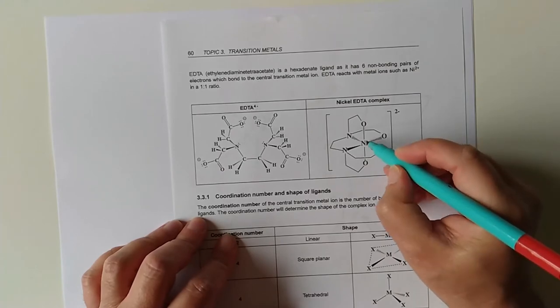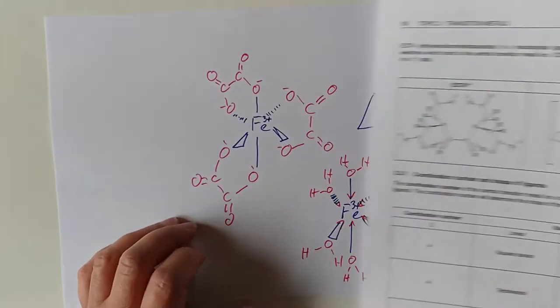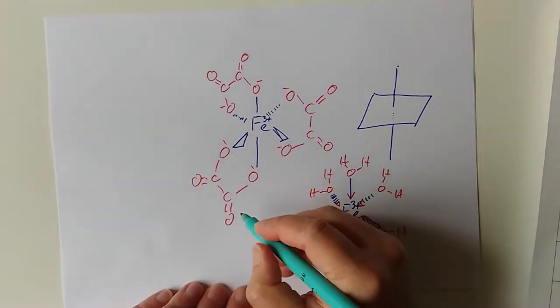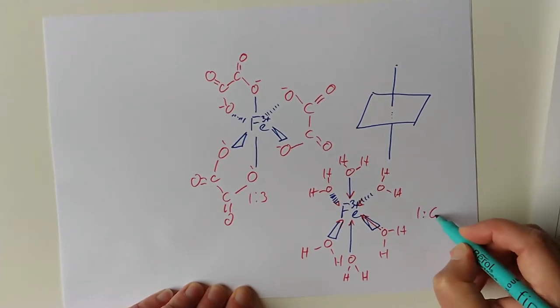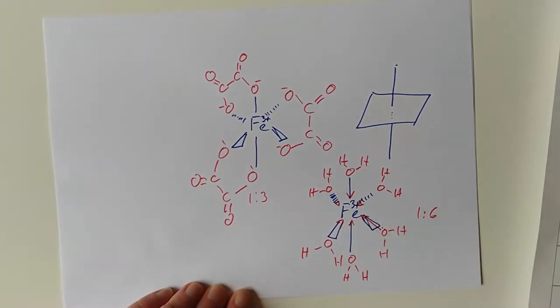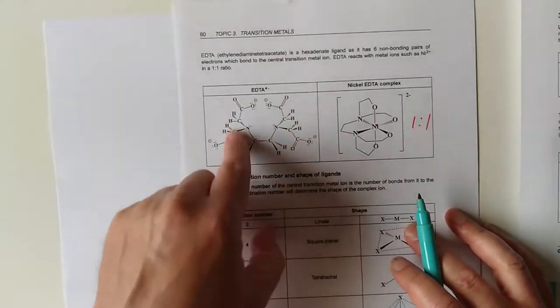And these are all dative bonds. So that's what you actually get when you dissolve, say, iron three chloride in water. You get a complex forming between the water molecules and the ions. Water's incredibly complex stuff. Had to be done.